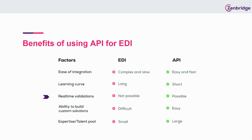Next, we have real-time validations. API makes real-time validations possible, which can cut down the time to process compliance requirements while sending and receiving information. EDI hasn't achieved real-time validations due to its rigid infrastructure, which can affect the progress of your business while exchanging data.